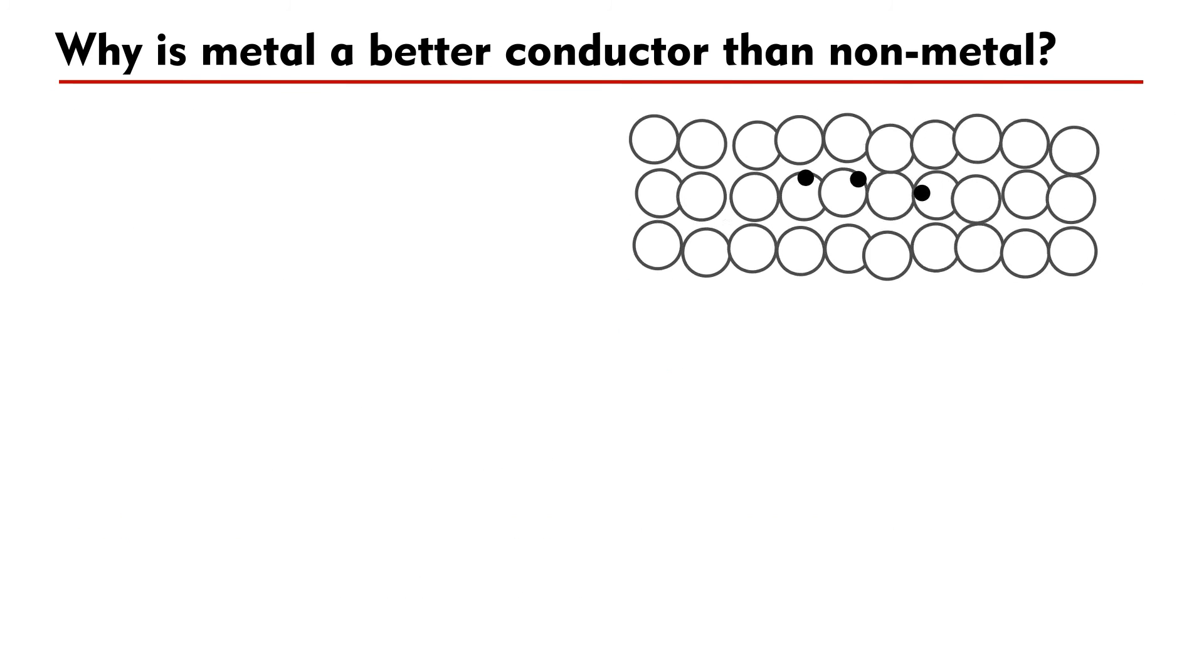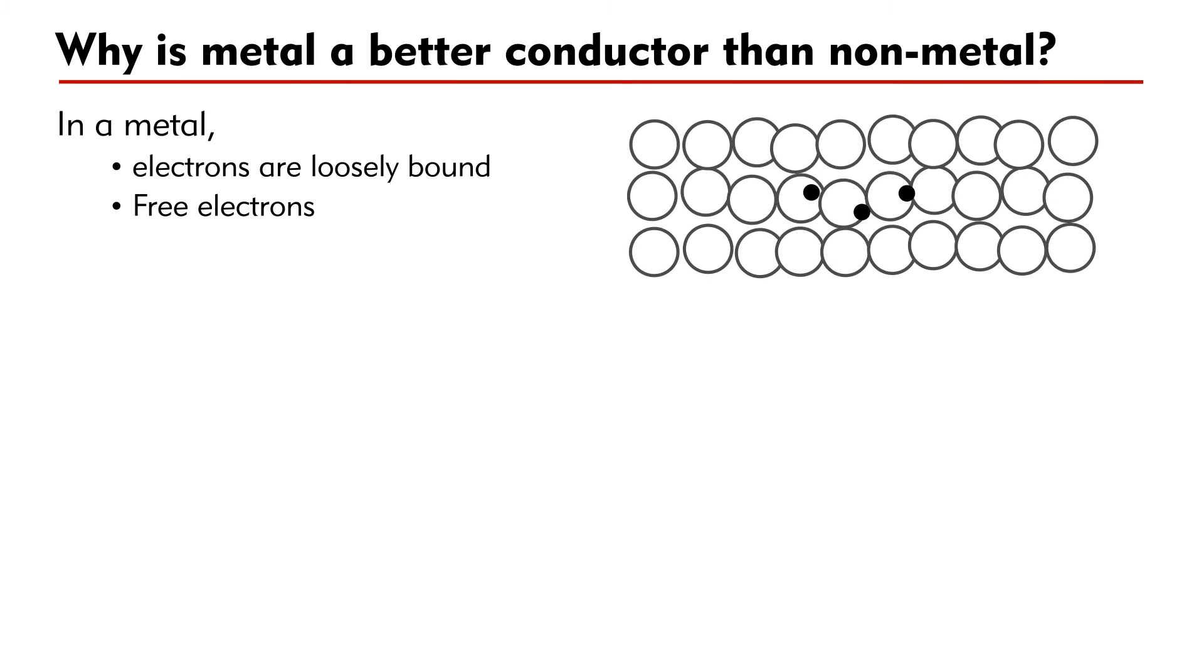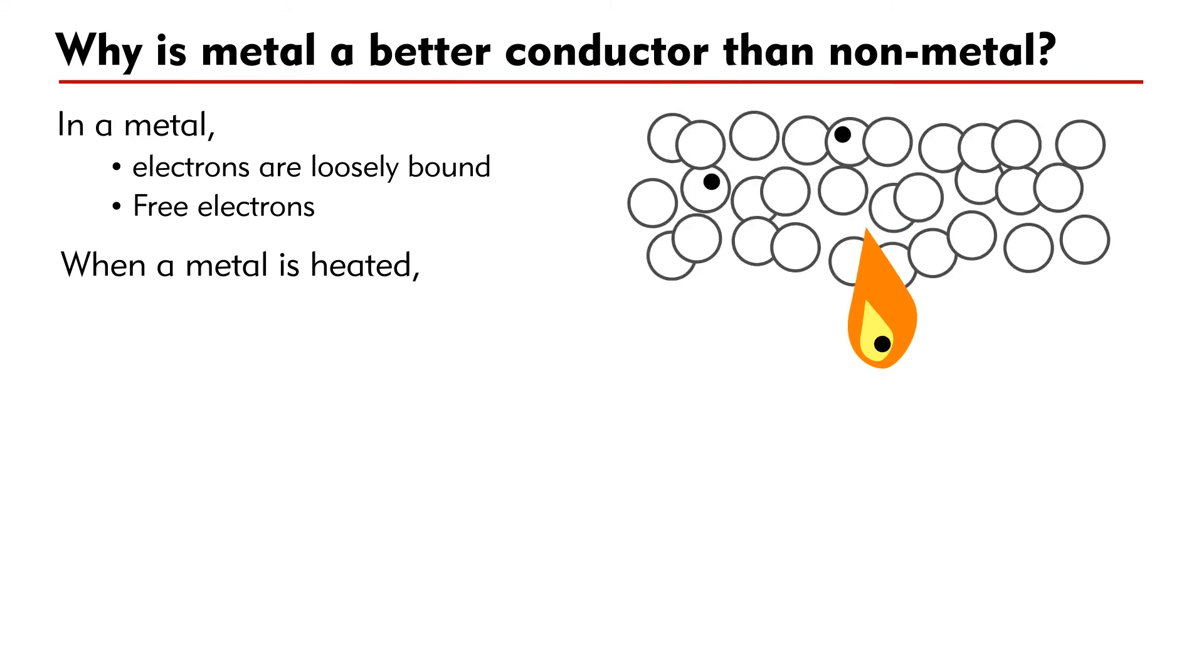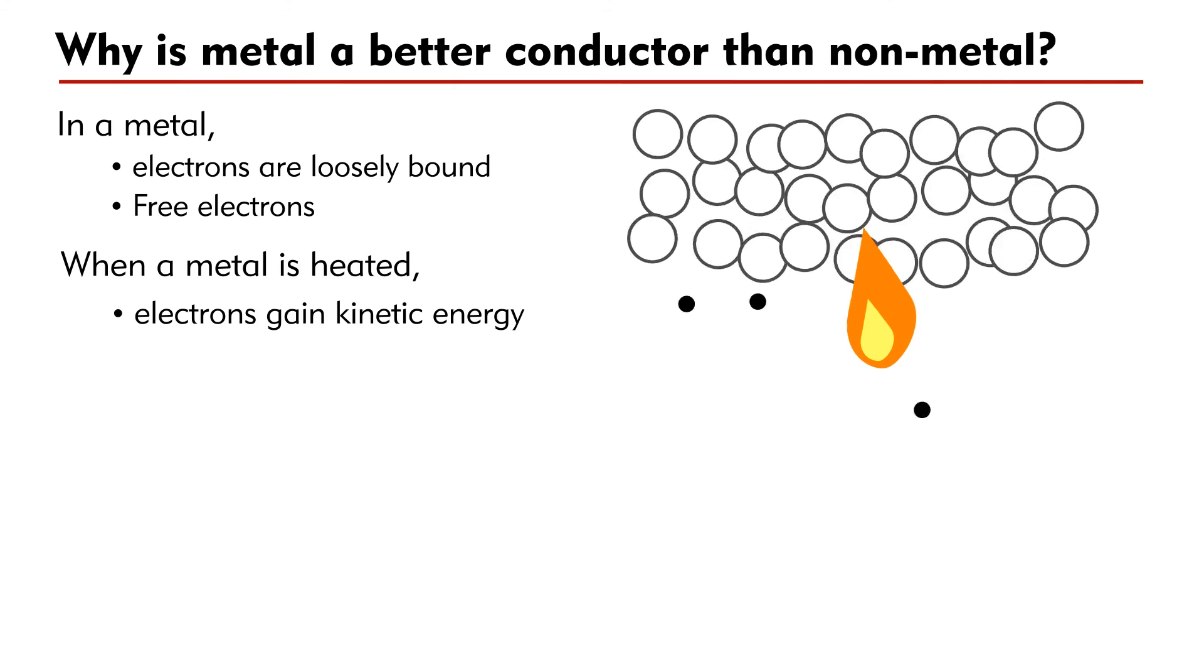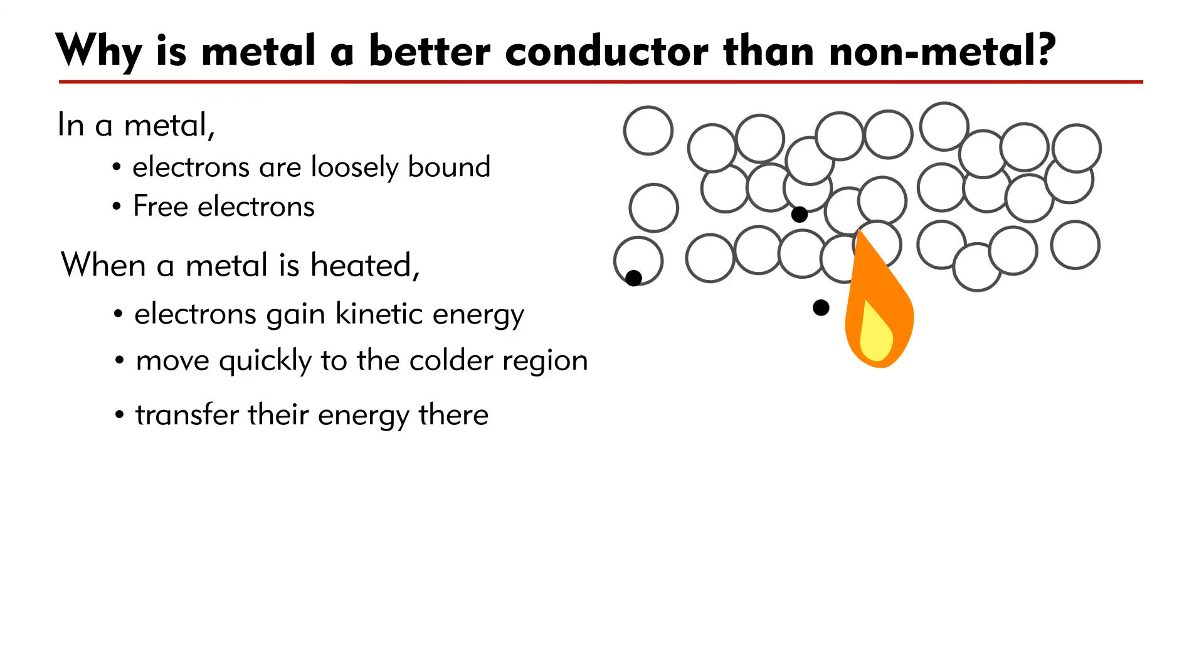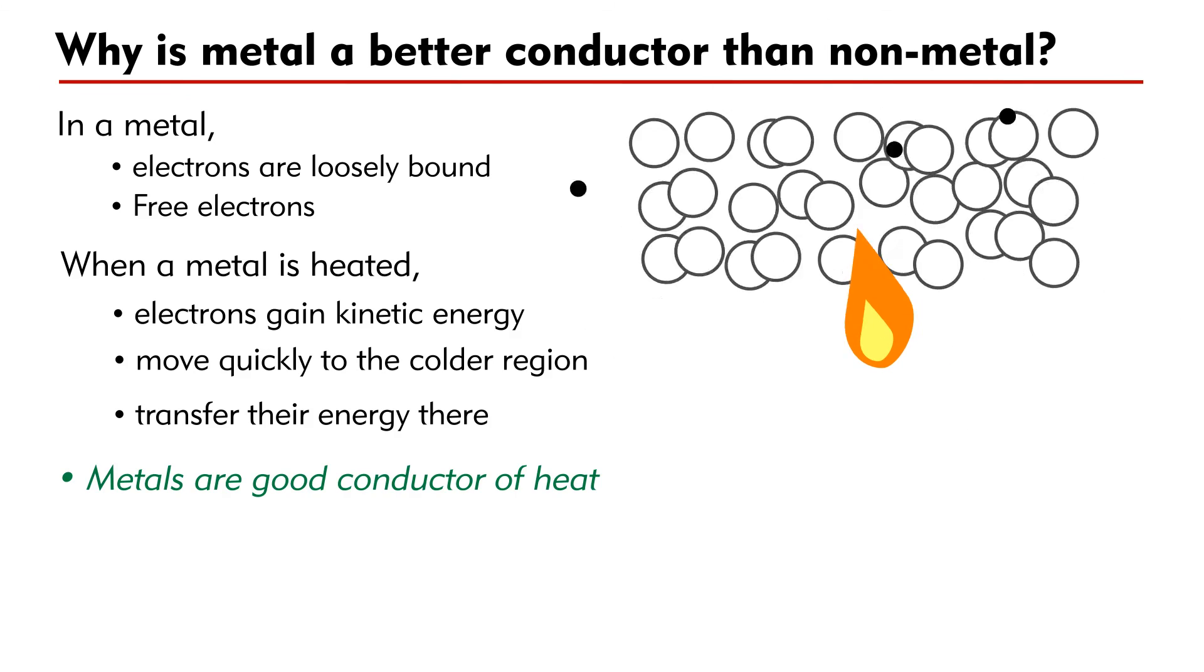Why is metal a better conductor than non-metal? In a metal, electrons are loosely bounded by the ions. They are known as free electrons. When a metal is heated, both ions and electrons gain kinetic energy. Unlike the ions, free electrons can move quickly to the colder region and transfer their energy there by collision. This explains why metals are good conductors of heat.